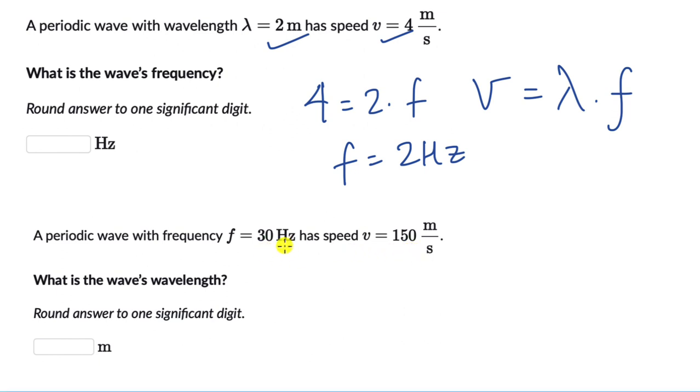And in the second one, we know the frequency and we know the wave speed. So this is 150 equals to lambda into 30. So lambda comes out to be equal to 5 meters.